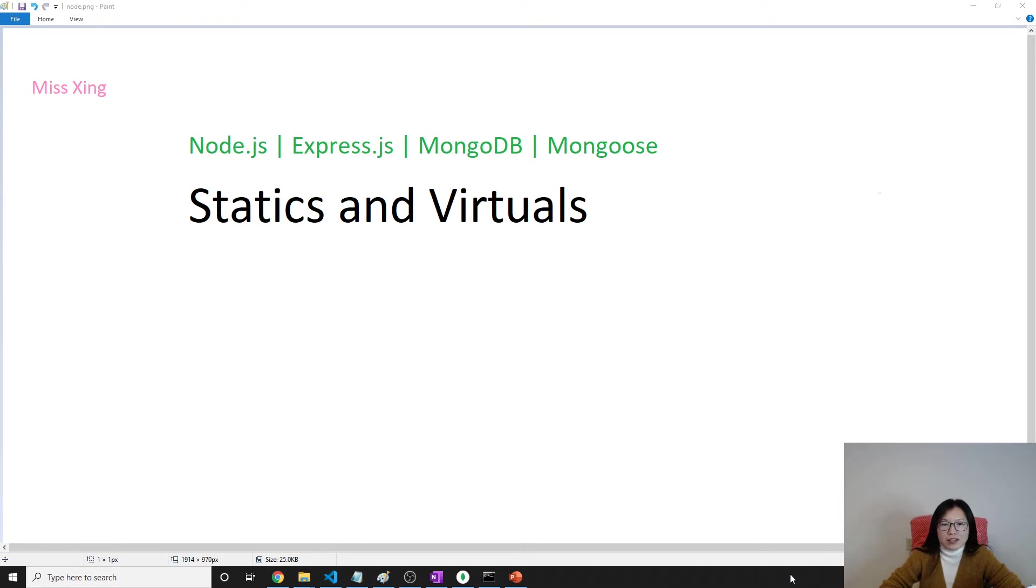In this video I'm gonna show you two slides which cover statics and virtuals. If I remember correctly, all the methods I wrote in the previous videos are all instance methods. Sometimes you might want to have other methods without using an instance, then we can add statics. For the virtuals, they are actually very similar to if you know Hibernate, there's an annotation called transient.